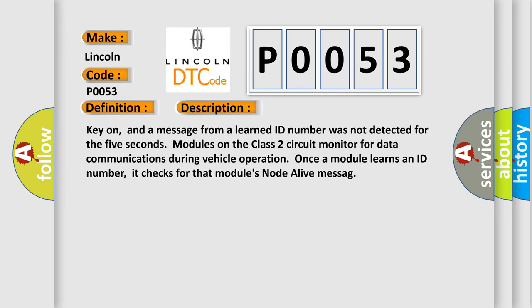Key on, and a message from a learned ID number was not detected for the five seconds modules on the class two circuit monitor for data communications during vehicle operation. Once a module learns an ID number, it checks for that modules node alive message.